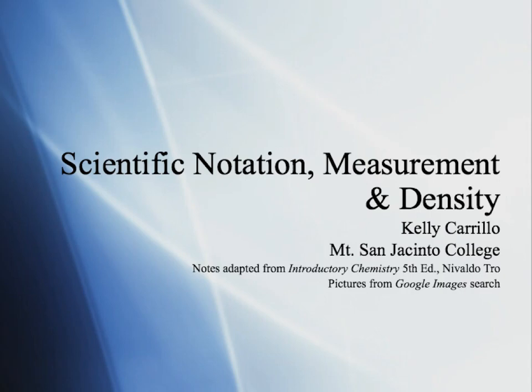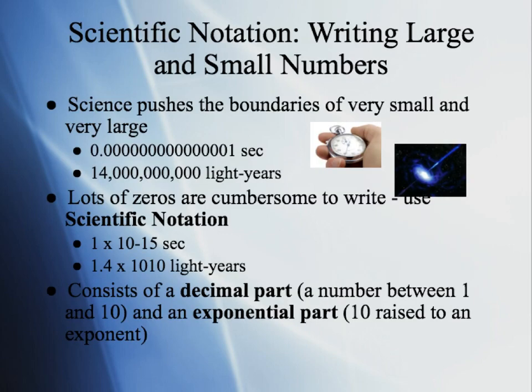Welcome to this online lecture covering scientific notation, measurement, and density. Scientific notation is used when we have really big numbers or really small numbers, because that means we have a lot of zeros. Writing zeros can be really cumbersome when we're doing calculations and measurements, so instead of writing all of those zeros, we're going to use scientific notation.